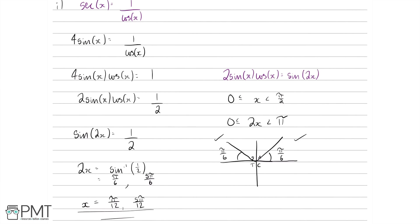That's it for this question. In terms of the marking: two marks for the two solutions, one mark for using the double angle formula, and one mark for recognising that sec x is 1 over cos x — that's four marks for this question.